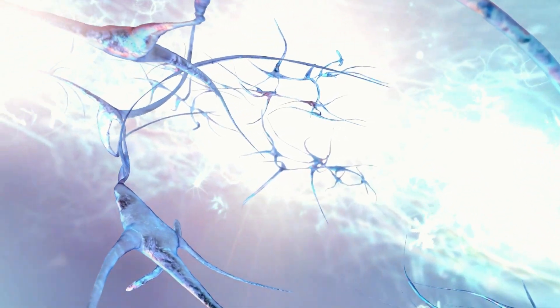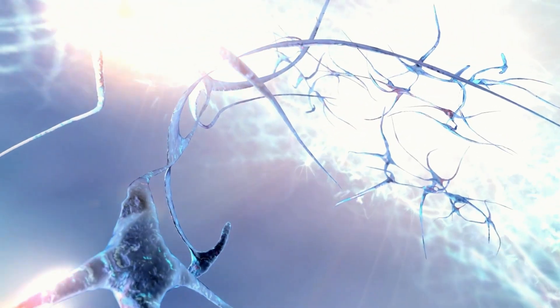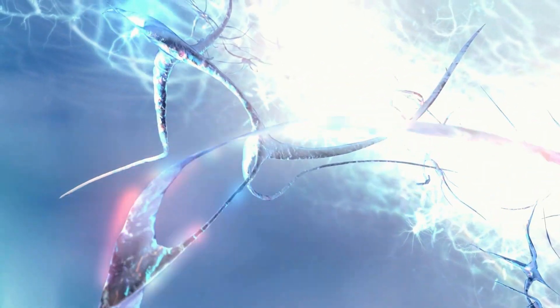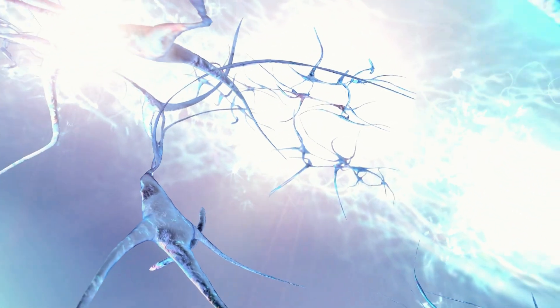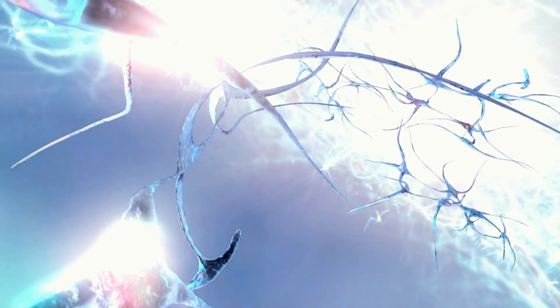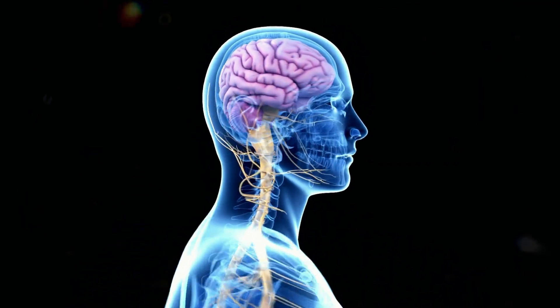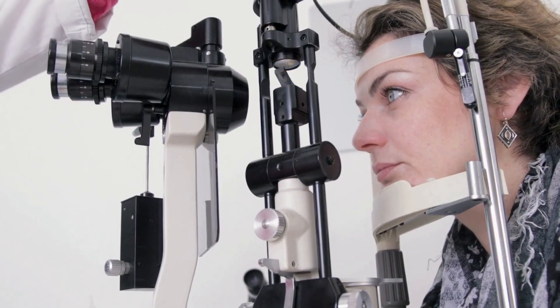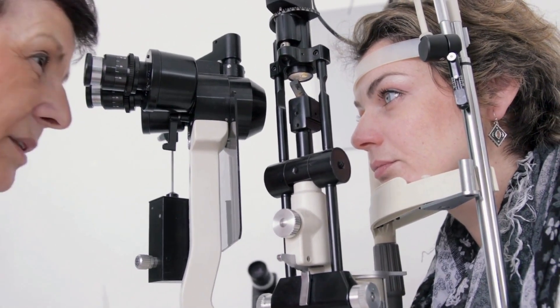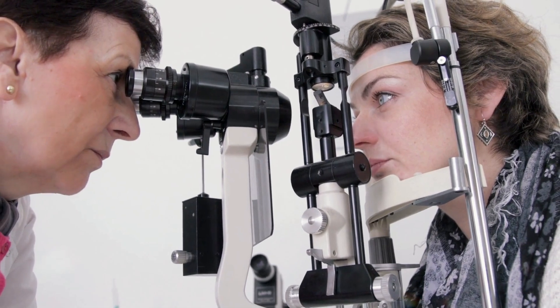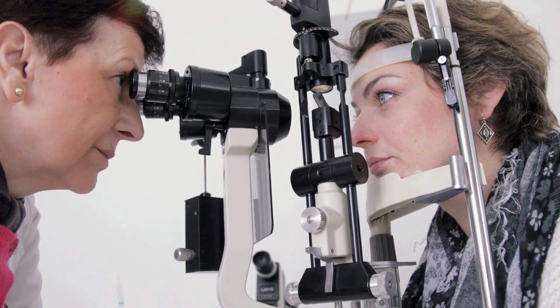Elevated IOP can put significant pressure on the optic nerve, the vital link between your eyes and brain. Think of the optic nerve as a superhighway transmitting visual information to your brain. If this highway becomes damaged, it can lead to blind spots or even vision loss. This damage usually happens gradually, making it hard to notice until the issue has progressed significantly. That's why understanding and monitoring your IOP is not just about managing a number — it's about protecting your long-term ability to see the world clearly.